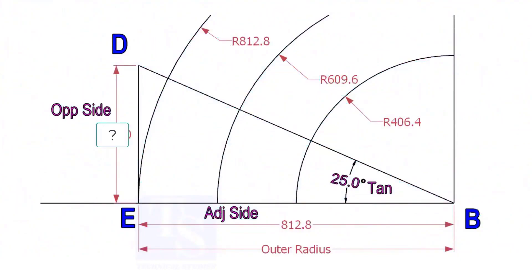Mark a line 25 degree rotated from the base line AB. To draw the line DB, we need to know the length of the line ED. To calculate ED, we need to apply the formula: tan theta equals opposite side divided by adjacent side.